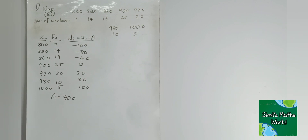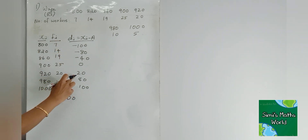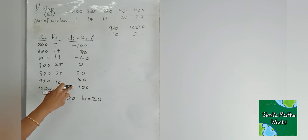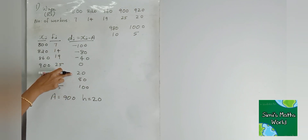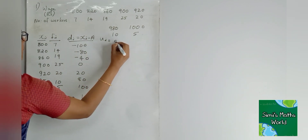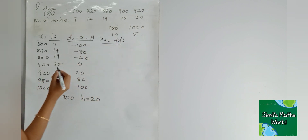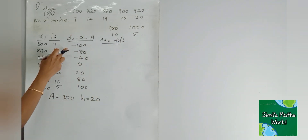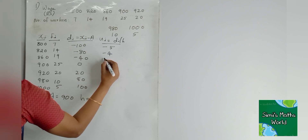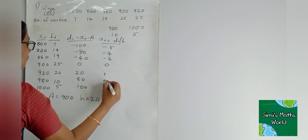Third step: choose a number h which is a common factor of di values 80, 100, 40. H is equal to 20. Calculate ui equal to di divided by h. That is minus 100 divided by 20. The ui values are: minus 5, minus 4, minus 2, 0, 1, 4, 5.